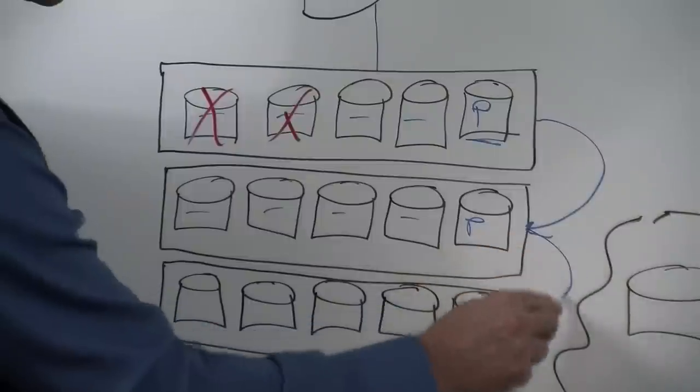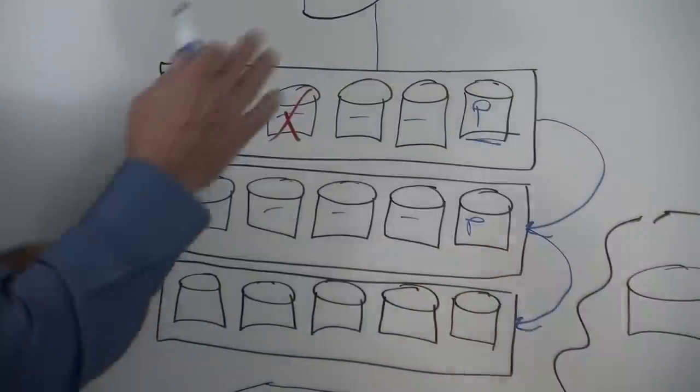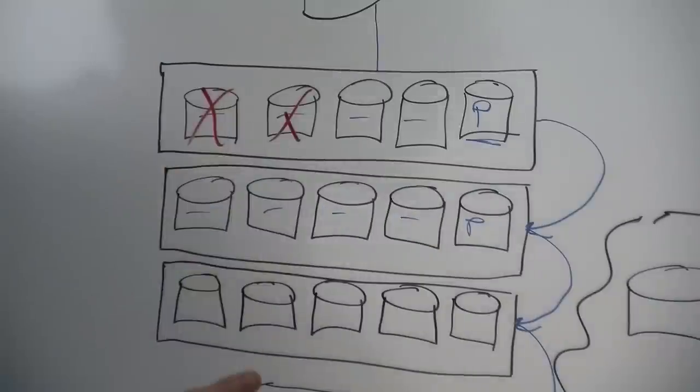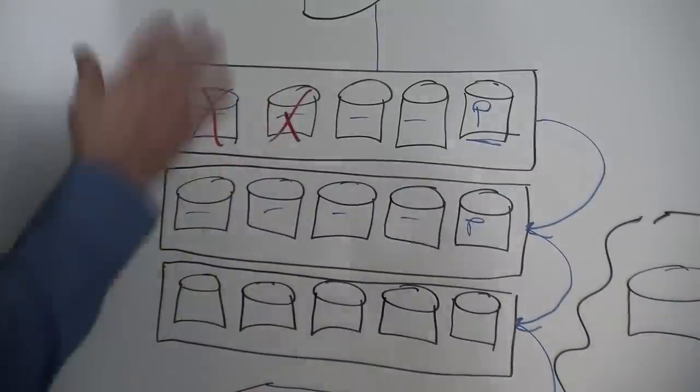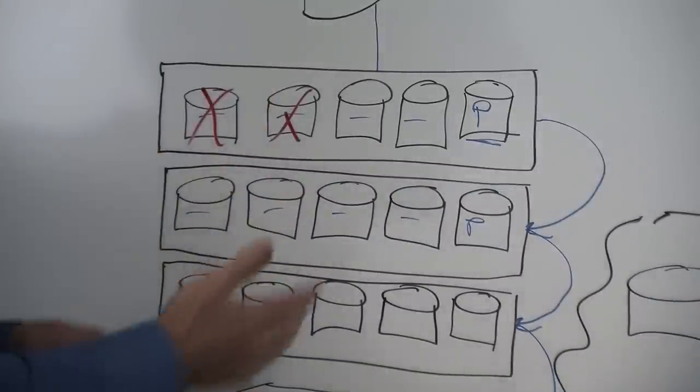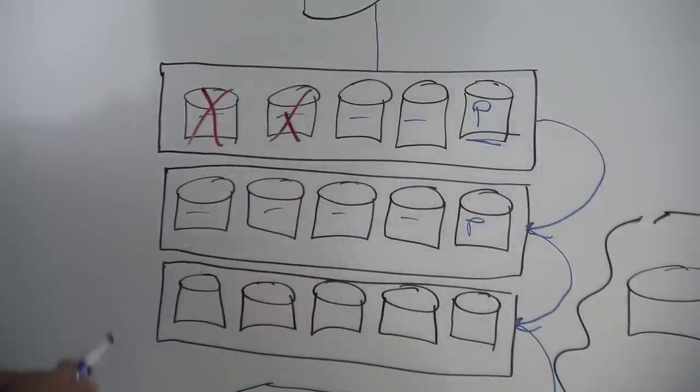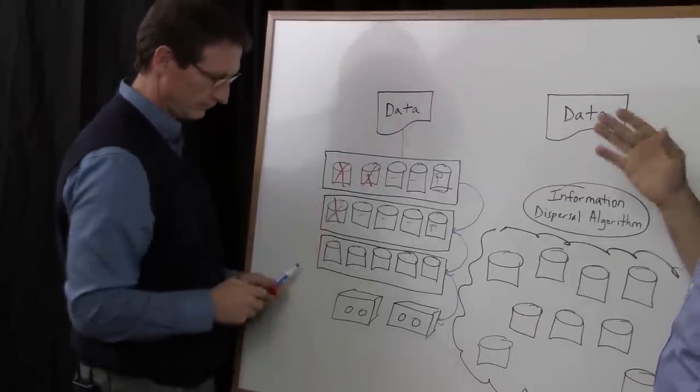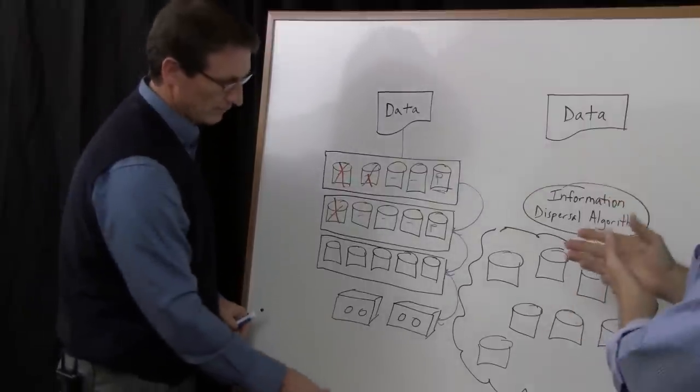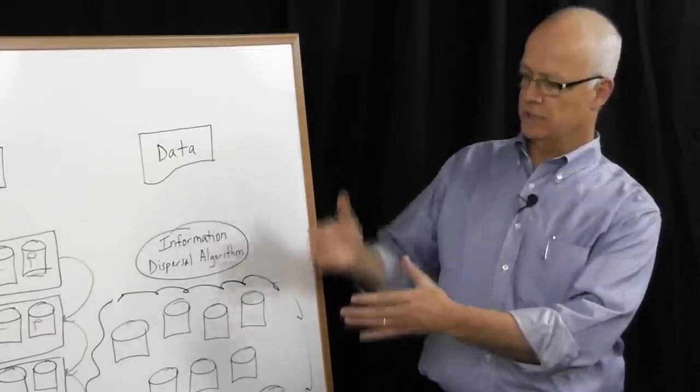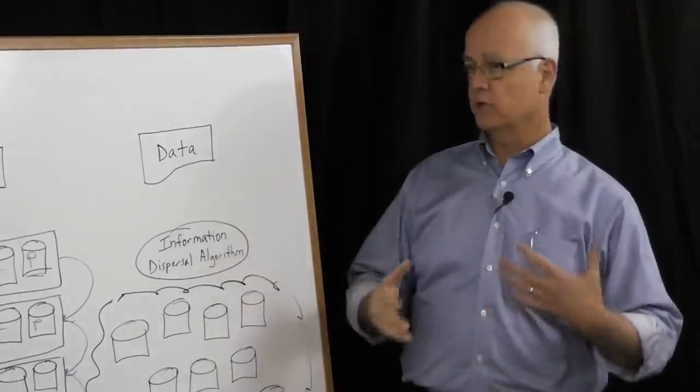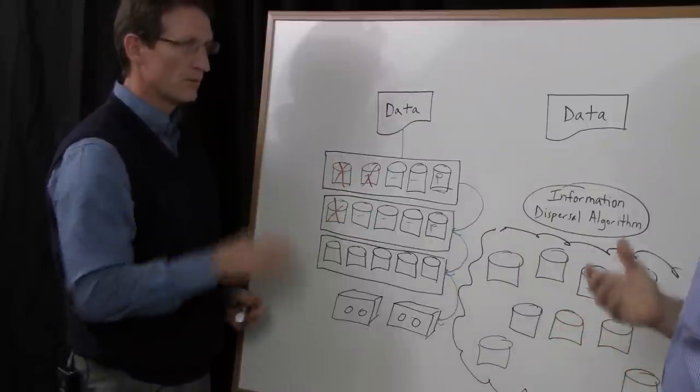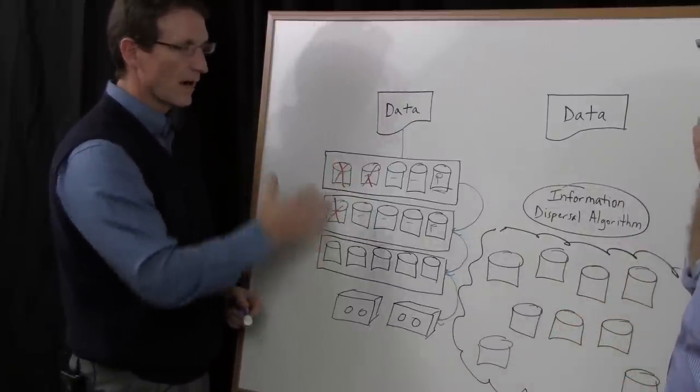So people might make a second or third copy of their data on another array, and they may make a fourth copy on tape just to protect it. So you're talking about four times the amount of information just to store it, just to protect it from general failures like disk drive failures.